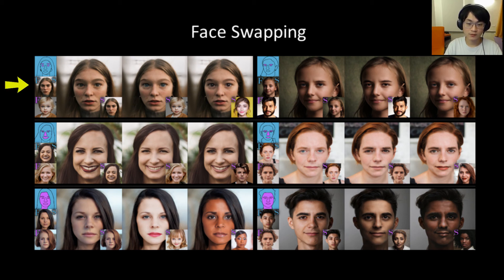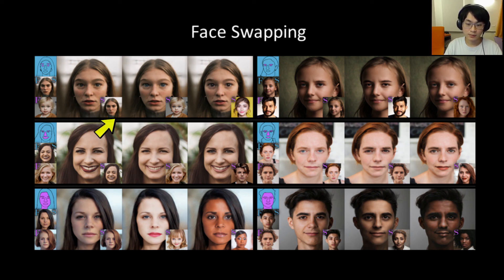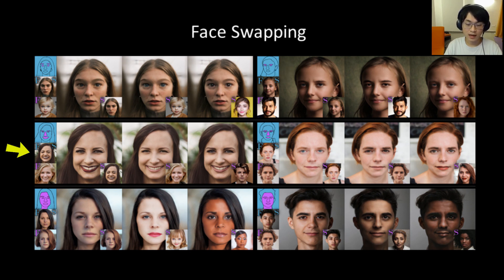We also apply the same approach to facial features. On the top row, we transfer the eyes including the eyebrows — the shapes are indicated in pink, the identity image is shown in the blue region, and different images are used to transfer the coarse structure and appearance such as color. You can see that we are able to transfer the eyes in various situations. The second row applies the same approach to the eyes, nose, and mouth, and the last row also transfers the skin of the subject's face.